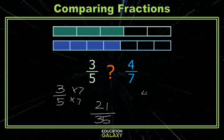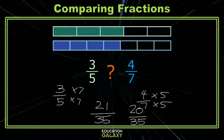On the right, we'll take 4 sevenths, multiply the numerator and the denominator by 5, and get the equivalent fraction 20 thirty-fifths. Now I can compare 21 thirty-fifths and 20 thirty-fifths, and I know 21 thirty-fifths is greater. Let's try one more.